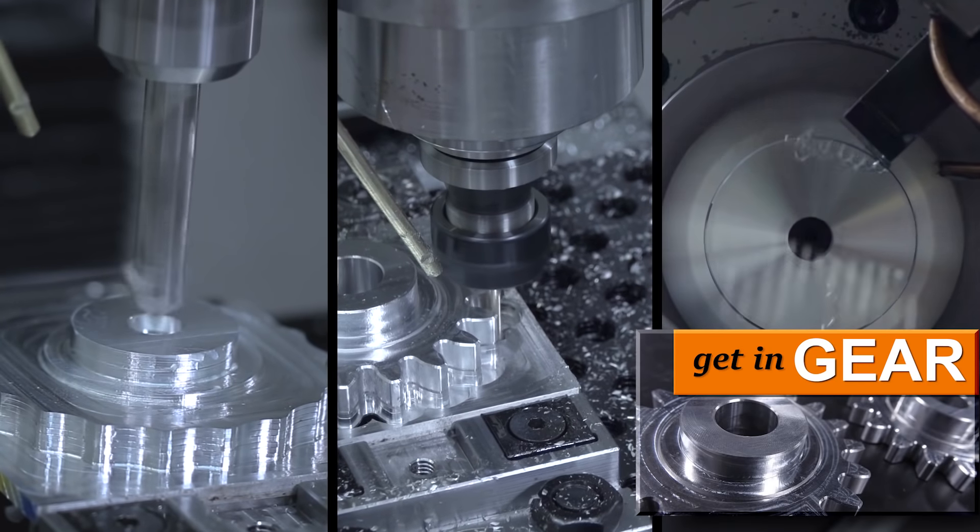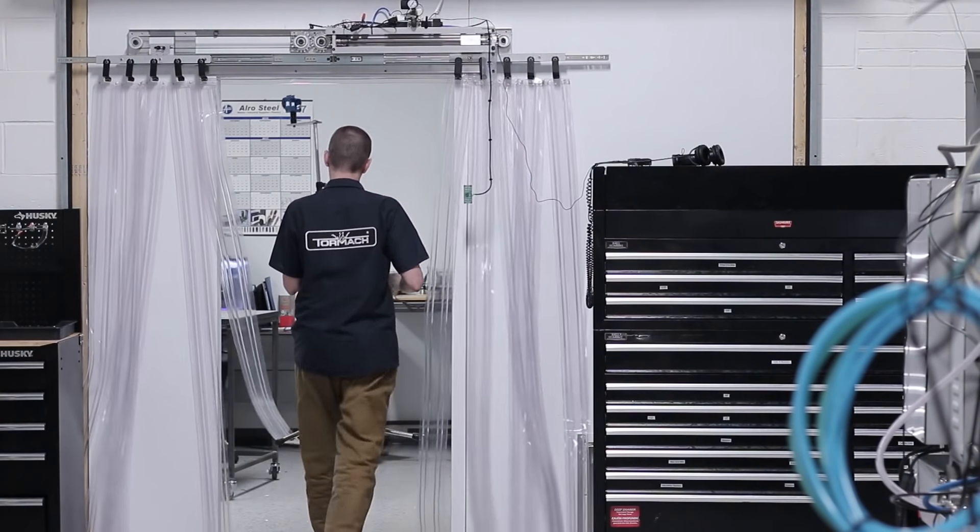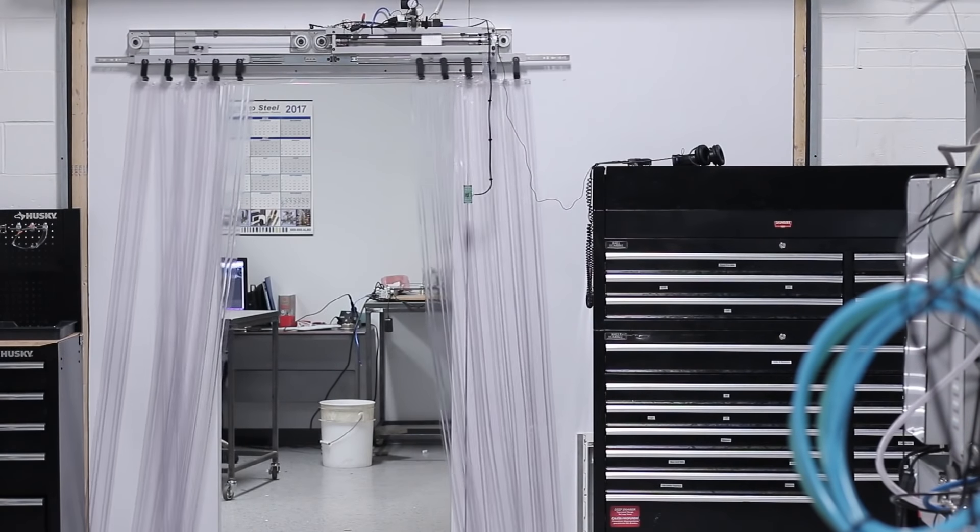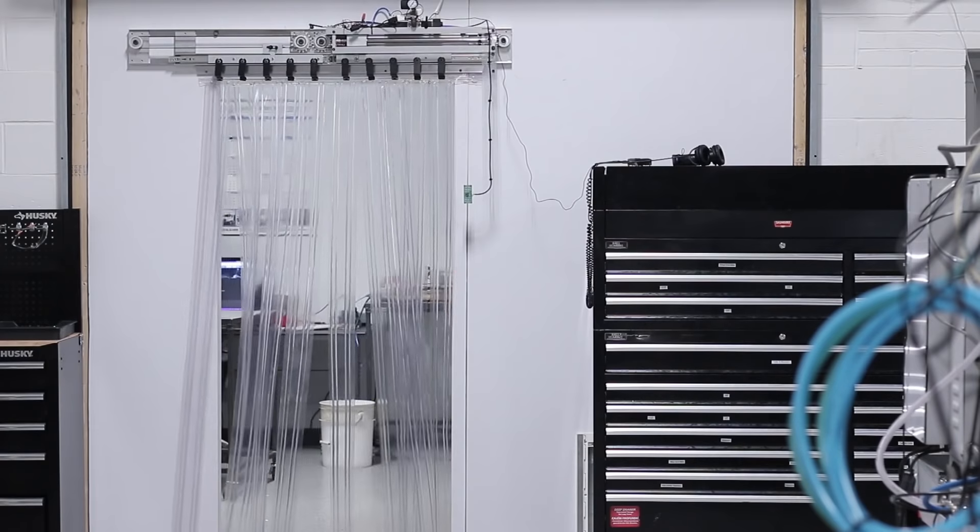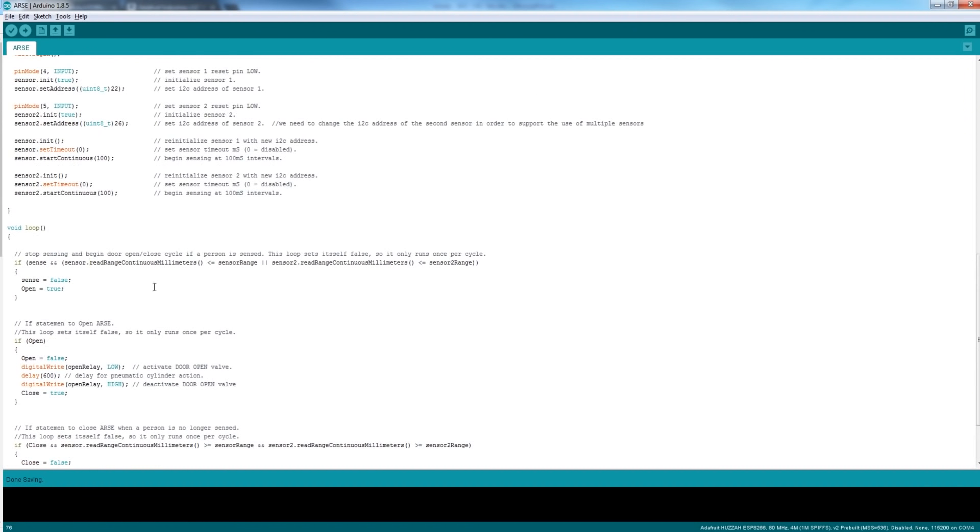It uses the two gears that we made in a past Wednesday widget. It uses a Bimba rodless pneumatic cylinder and some slide rails just like you'd have out of a kitchen cabinet drawer and finally some Arduino code. Welcome to our Wednesday widget.